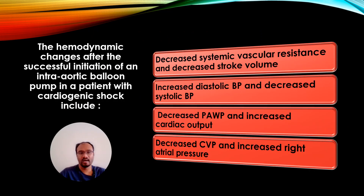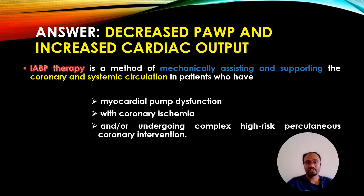The next question: The hemodynamic changes after successful initiation of an intra-aortic balloon pump in a patient with cardiogenic shock include: decreased systemic vascular resistance and decreased stroke volume; increased diastolic BP and decreased systolic BP; decreased pulmonary artery wedge pressure and increased cardiac output; or decreased central venous pressure and increased right atrial pressure. The correct answer is IABP therapy.